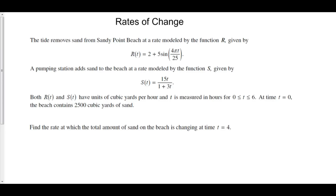The tide removes sand from Sandy Point Beach at a rate modeled by the function r of t. A pumping station adds sand to the beach at a rate modeled by the function s of t. Both r of t and s of t have units of cubic yards per hour, and t is measured in hours for 0 to 6. At time t equals 0, the beach contains 2500 cubic yards of sand.